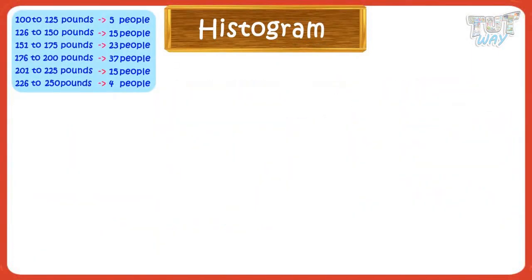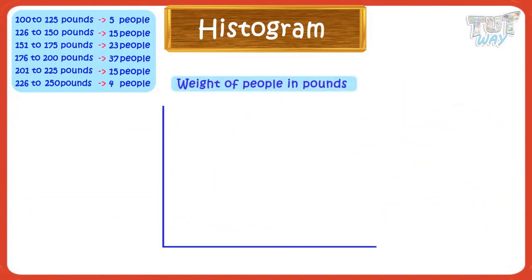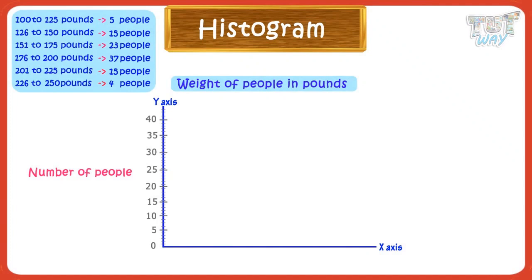The title of the graph will be 'Weight of People in Pounds.' One form of data we have is number of people — it's numeric data and can be easily accommodated on a simple scale along any axis. Let's make the scale of the y-axis. We have number of people in the range of 1 to 40 in every class, so we will make the scale accordingly. The second information we have is weights of people in pounds, which is already divided into class intervals. On the x-axis, make a scale showing class intervals. According to the data, 5 people have weights in the range of 100 to 125 pounds, so make a bar up to the mark of 5.